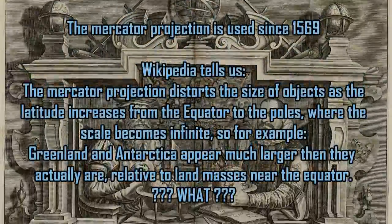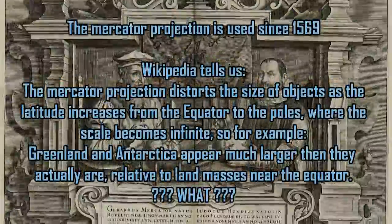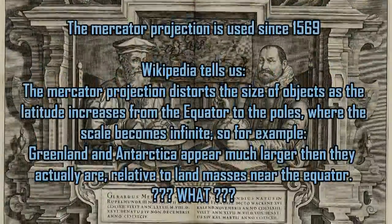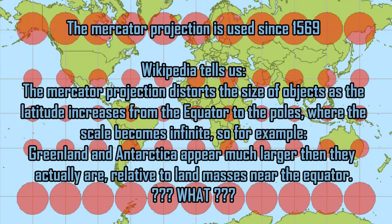The Mercator projection has been used since 1569. It distorts the size of objects as latitude increases from the equator to the poles, where the scale becomes infinite. So for example, Greenland and Antarctica appear much larger than they actually are relative to land masses near the equator.